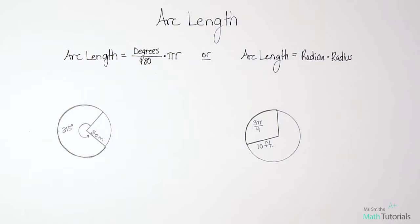Let's first look at the one with degrees. We can find arc length, and again arc length is distance around the circle for the arc section that you're looking for. So it's like the distance from here to here for this one.